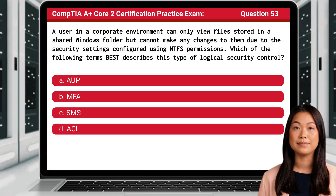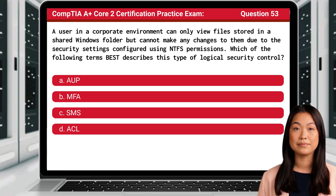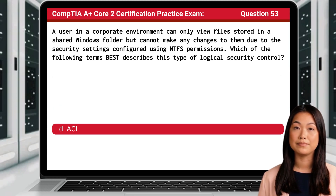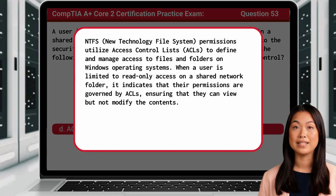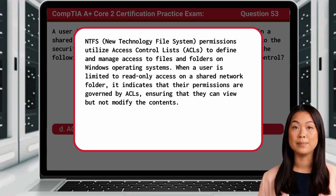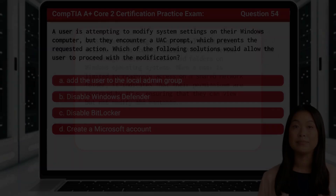Question 53: A user in a corporate environment can only view files stored in a shared Windows folder but cannot make any changes to them due to the security settings configured using NTFS permissions. Which of the following terms best describes this type of logical security control? The answer is D: ACL. NTFS permissions utilize Access Control Lists, or ACLs, to define and manage access to files and folders on Windows operating systems. When a user is limited to read-only access on a shared network folder, it indicates that their permissions are governed by ACLs.